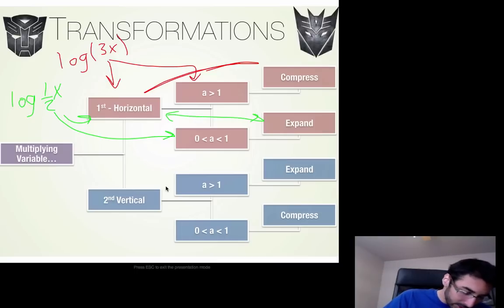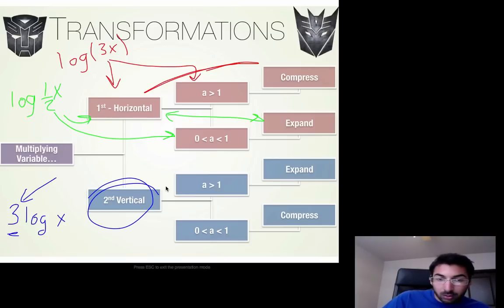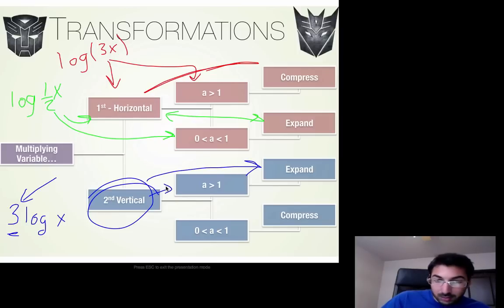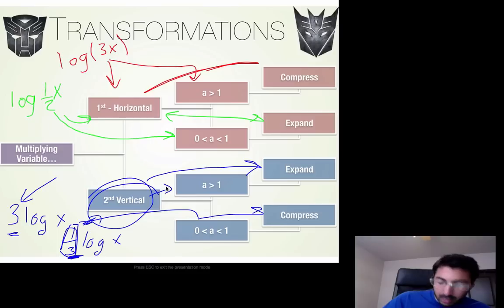Same rules, we're still staying consistent. If we have something like 3·log(x), notice that 3 is on the outside of the function — that means it's going to be a vertical change. And since 3 is greater than 1, it's going to be a vertical expansion. Now if you have something like (1/3)·log(x), that 1/3 is being multiplied on the outside, so it's going to be a vertical change. And since it's between 0 and 1, it's going to be a vertical compression. Same rules — you should have mastered this by now, and we'll be going over this on Monday.